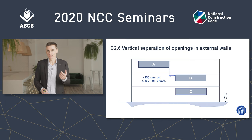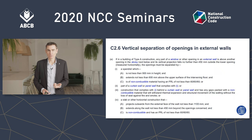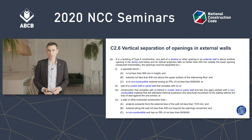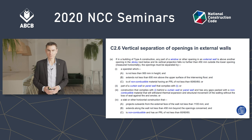So if we have to provide vertical separation, the various options are given in sub-clauses (i) to (iv). In short, it's going to look like an FRL of 60/60/60 — either vertically, which is options one to three, or horizontally, which is option four.